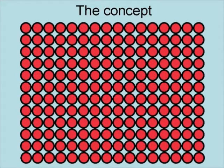As an object is cooled, the object's molecules slow down. This allows the forces between the molecules to organize the molecules, such that at absolute zero all the heat is removed and the molecules stop moving. This allows the forces between the molecules to fully organize the molecules, resulting in zero entropy.